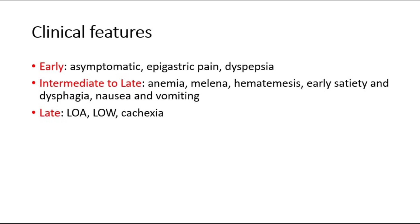Intermediate to late features include anemia, melena where there is blackish stool, hematemesis which means vomiting of blood, and early satiety — a significant feature of gastric cancer where the patient complains that before they could eat a full plate of rice, but now after eating only half a plate they feel full already. So that means there is early satiety, which means an early sense of fullness.